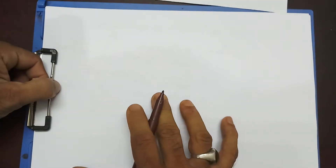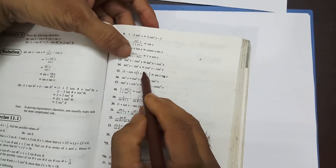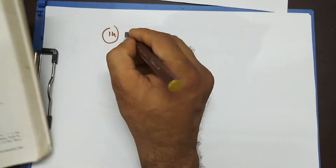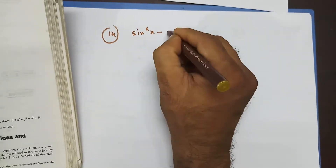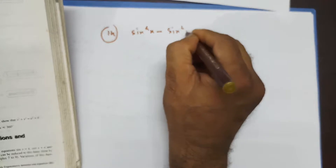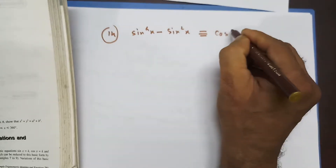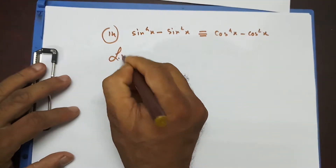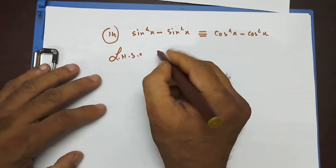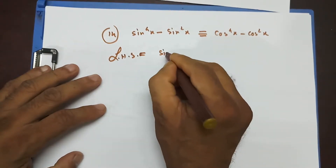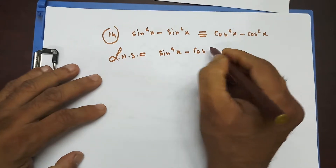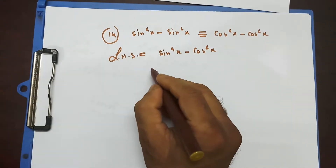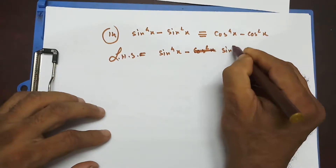Now let's do question number 14. Question 14 says: sin⁴x minus sin²x is identical to cos⁴x minus cos²x. Starting with the left hand side: sin⁴x minus sin²x.